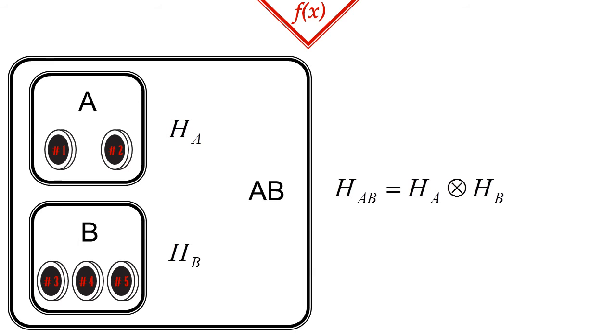The state of the combined system will be a vector in a joint space H_AB, which is H_A tensor H_B. The dimension of these spaces is 2 to the power of n, where n is the number of qubits they consist of.